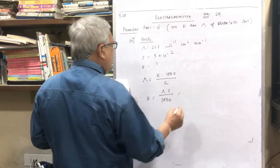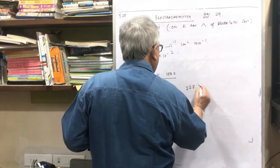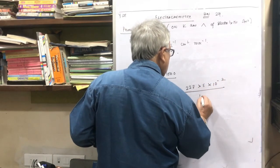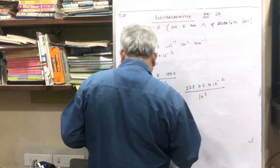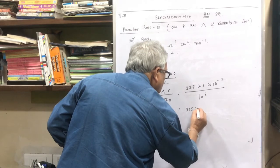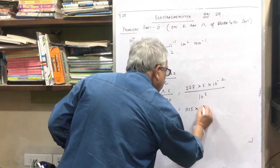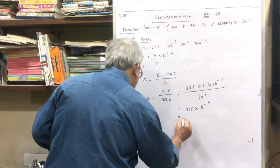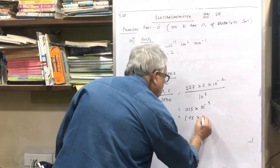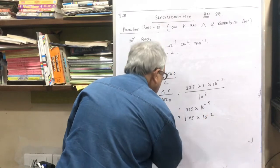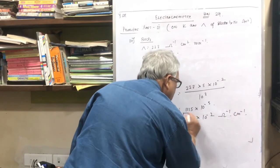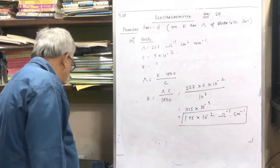K is equal to lambda × C upon 1000. Lambda is 223, C is 5 × 10⁻², upon 10³. This comes to 1115 × 10⁻⁵, which is 1.115 × 10⁻² ohm inverse centimeter inverse. Just in one step we solved problem number 30.